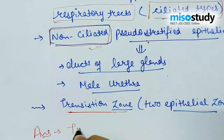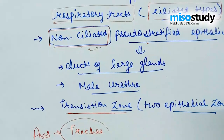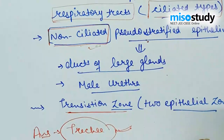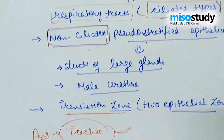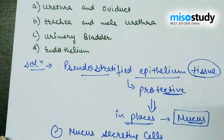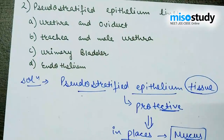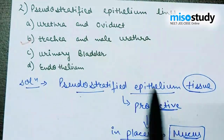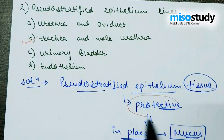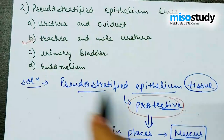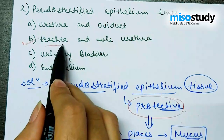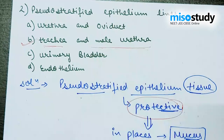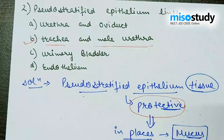According to this discussion, the right answer is option B — trachea and male urethra. The trachea contains ciliated pseudostratified epithelium providing protection, and the male urethra contains non-ciliated pseudostratified epithelium. So the answer for question two from 'Structural Organization in Animals' is trachea and male urethra.